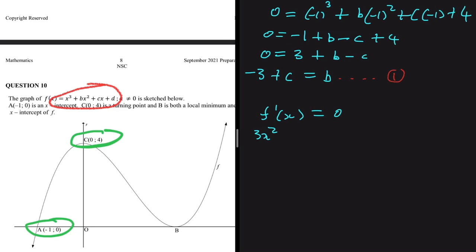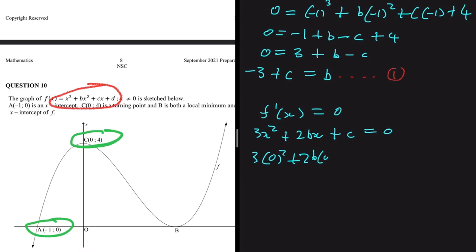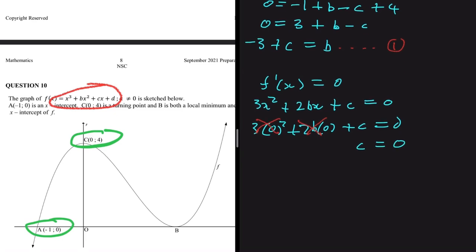Applying the power rule: f'(x) = 3x² + 2bx + c. Since d = 4 is a constant, its derivative is 0. At turning point C, x = 0 (the y-intercept). Substituting x = 0: 3(0)² + 2b(0) + c = 0. The first two terms fall away, leaving c = 0. This is equation 2.